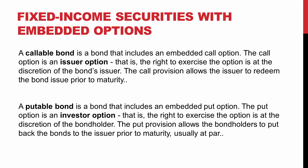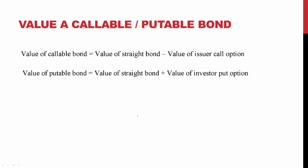This usually happens when interest rates have risen and high-yielding bonds are available. Key points to remember: callable bonds are issuer options — they favor the issuer — and they are exercised when interest rates decrease. The value of a callable bond is usually less than the value of a straight bond because callable bonds favor the issuer, who must give a discount compared to straight bonds. Therefore, if you remove the value of the issuer's call option from a straight bond, you get the value of a callable bond.